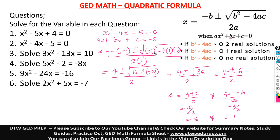The value inside the square root — b squared minus 4ac — is called the discriminant. When it is greater than zero, you have two real solutions, meaning two answers. When we simplified everything, it gave us 36 — greater than zero — so we had two real solutions. When we get to the ones with one real solution or no real solution, you will see what I mean.